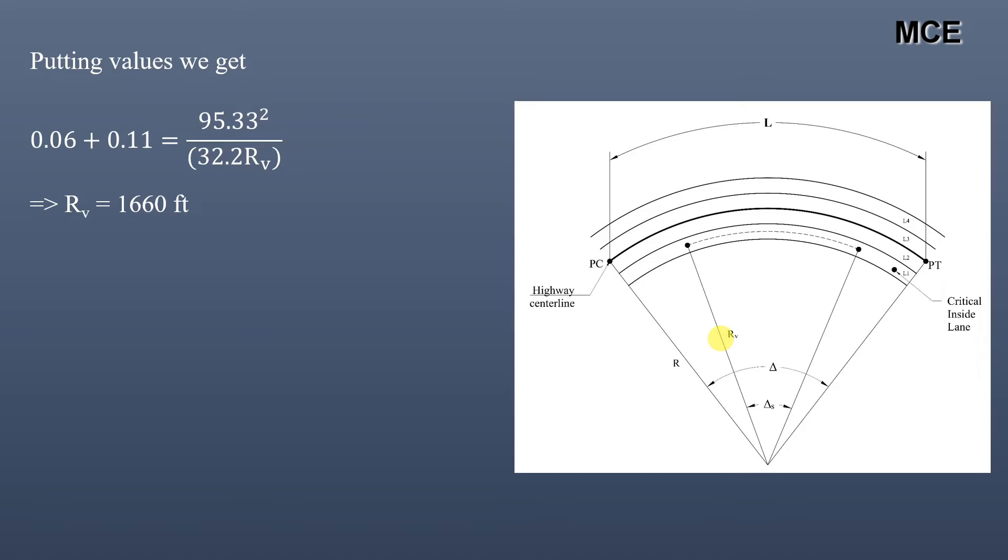Since Rv is the radius of the innermost lane, the radius of the horizontal curve is given as: